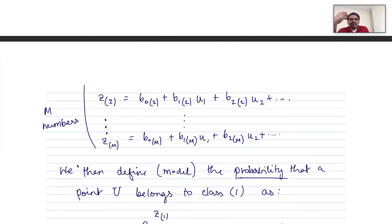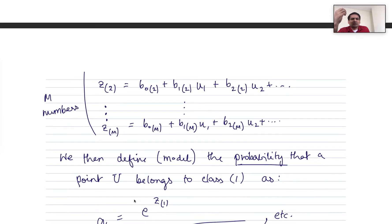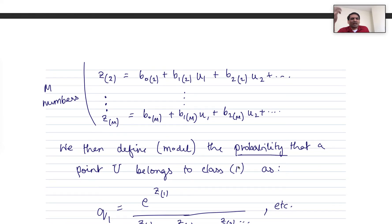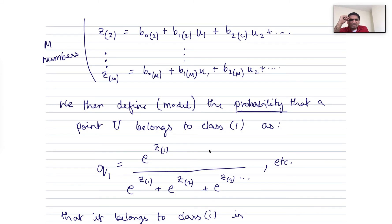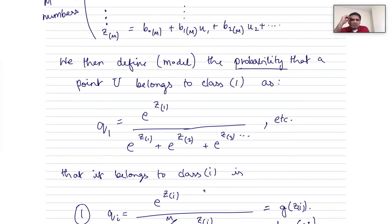And then we define or hypothesize that the probability that a given point u belongs to class 1, let's say there are classes 1, 2, 3, 4, 5, 6, until m. Then the probability that it belongs to class 1, we say is e to the z1 divided by e to the z1 plus e to the z2 plus e to the z3, etc., until e to the zm.